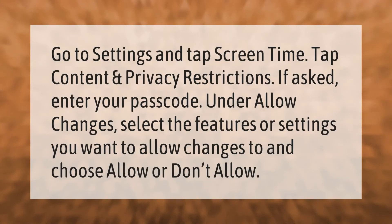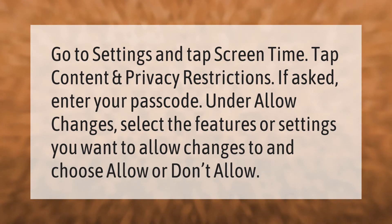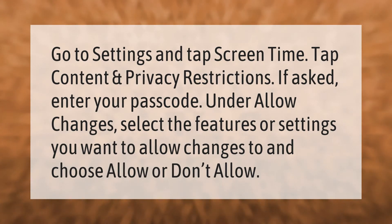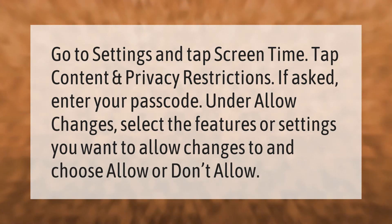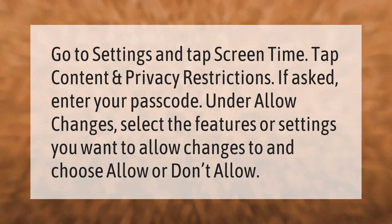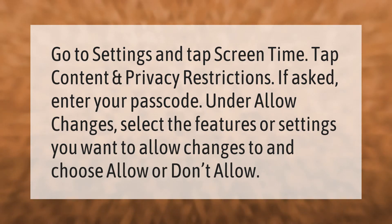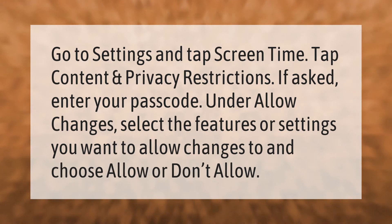Go to Settings and tap Screen Time. Tap Content and Privacy Restrictions. If asked, enter your passcode. Under Allow Changes, select the features or settings you want to allow changes to, and choose Allow or Don't Allow.